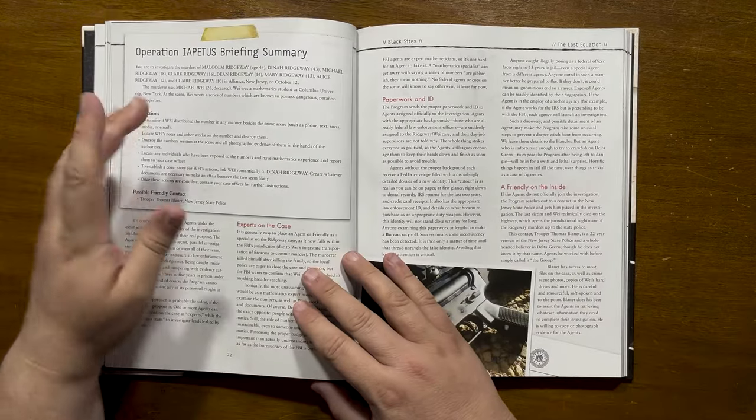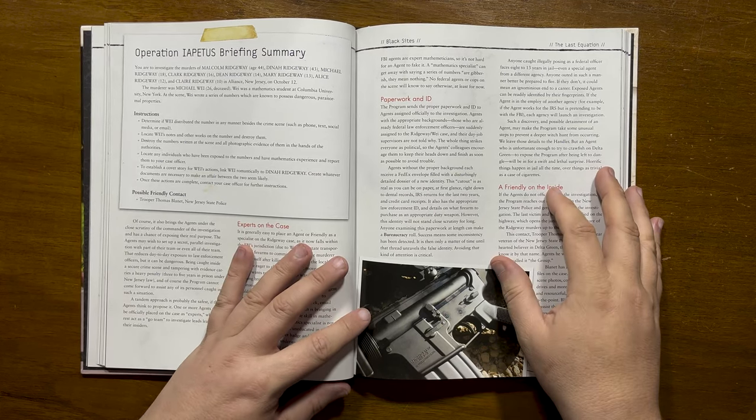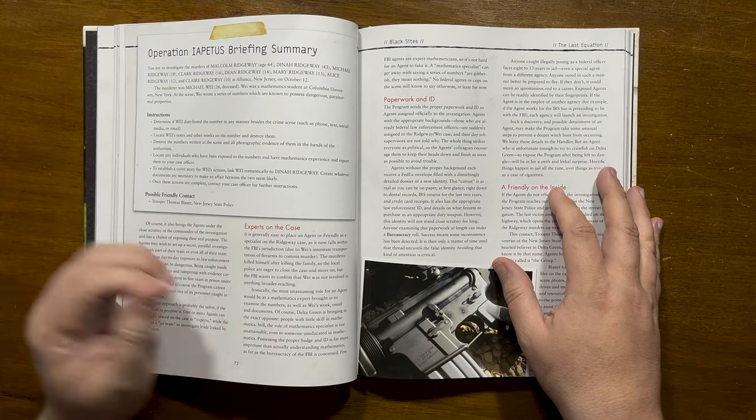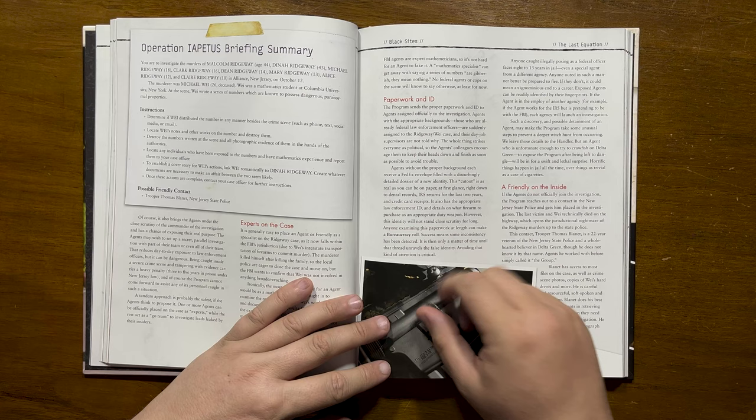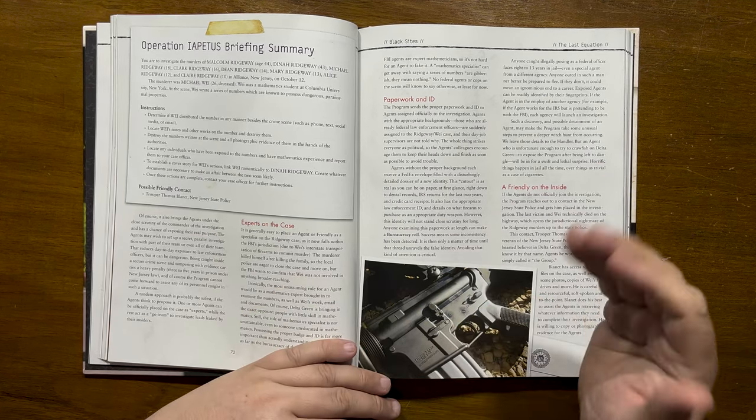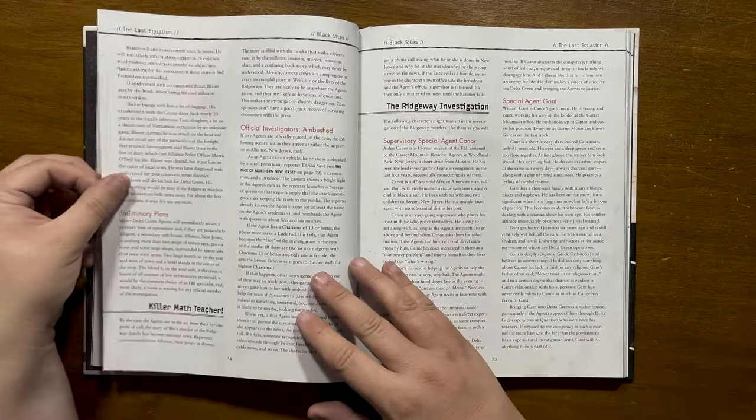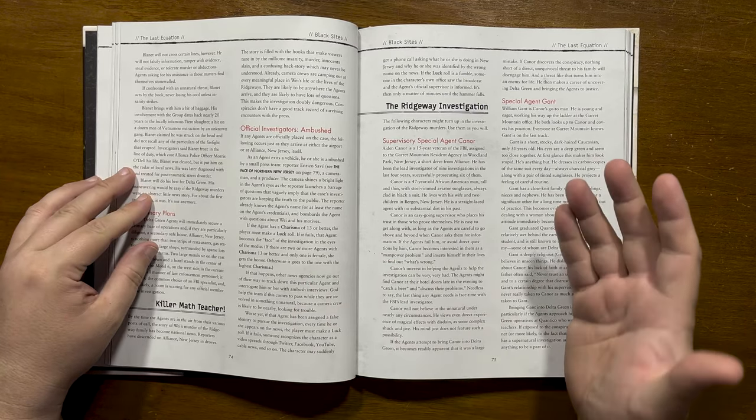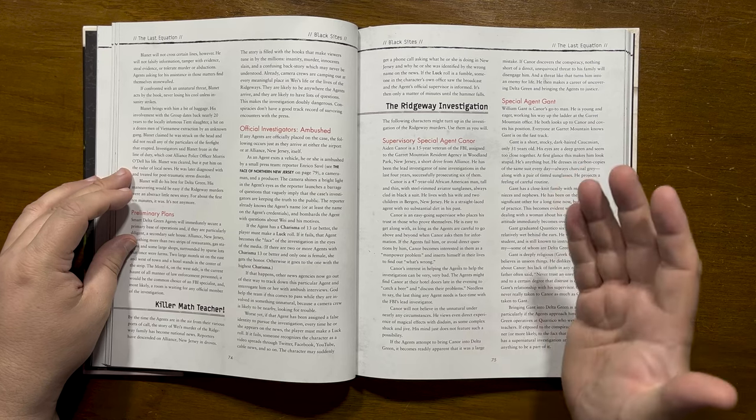Here we have a briefing of Operation Iapetus which details exactly what the agents are expected to do. It gives us details on how the program provides the agents with proper paperwork and ID and also talks about a friendly that they have on the inside, Trooper Thomas Blannett. A 22-year veteran, Blannett will assist the agents however he can but will fall short of crossing certain lines like falsifying evidence, murder or abductions. He has access to most files on the case including crime scene photos and will treat any unnatural threat by the book. We have details on what the agents should probably do on arrival and then it launches into the first event.